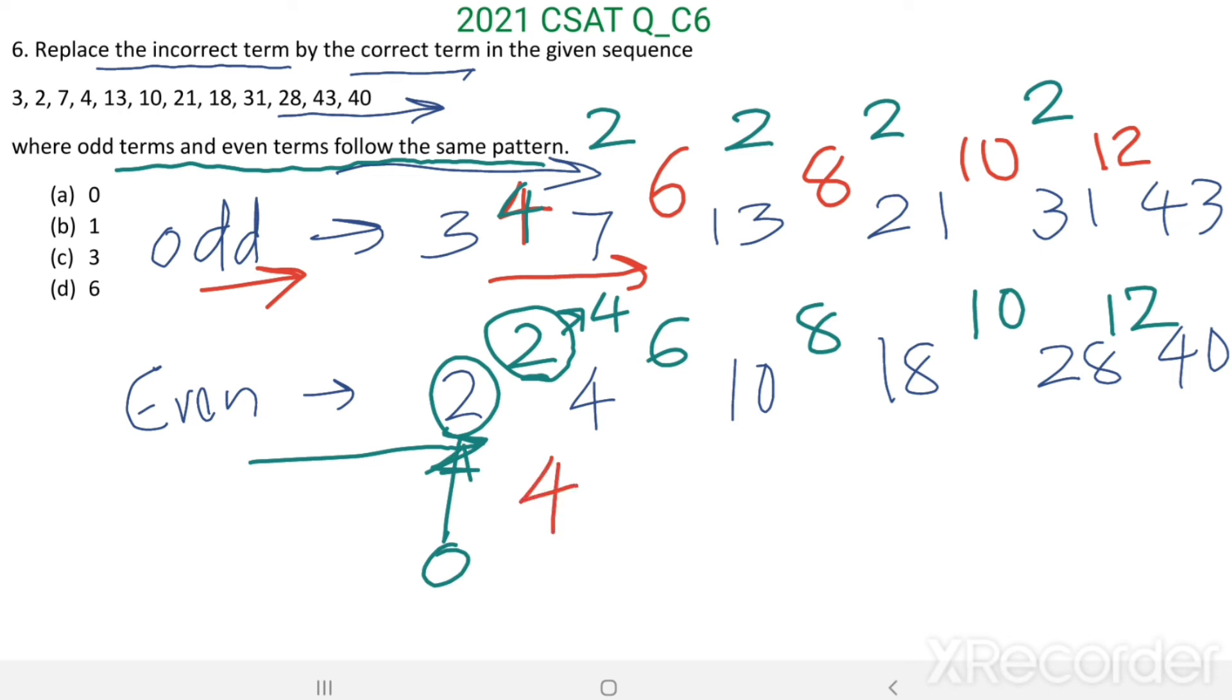Then we get 4, 6, 8, 10, 12. 4 plus 2 equals 6, 6 plus 2 equals 8, 8 plus 2 equals 10, 10 plus 2 equals 12. So in order to have the same pattern in both the series, you have to change this 2 by 0. So the required answer is option A: 0.